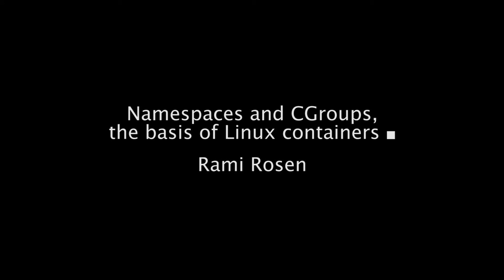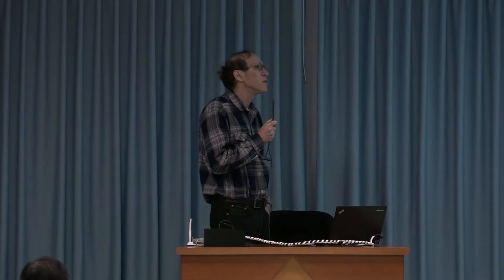My name is Rami Rozen. I work with Intel. I'm the author of a book titled 'Linux Kernel Networking' by an American publisher in New York. Today I will be talking about the Cgroup subsystem and the Namespace subsystem, and I will cover the most recent features merged in kernel 4.4 about three weeks ago, primarily Cgroup V2.